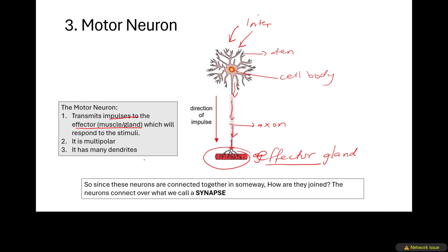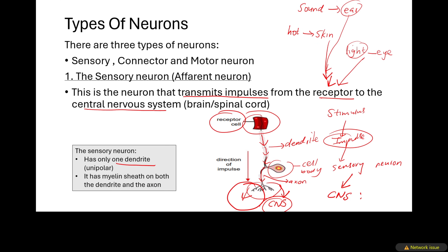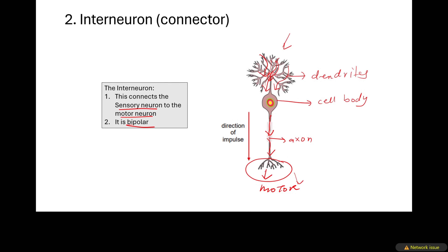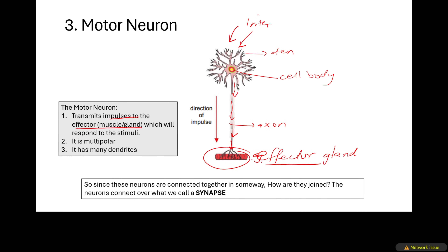The effector gland or muscle brings a response to the stimulus. For example, when it is hot, you sweat — the effector is the sweat gland. When you touch a hot stove, your muscles pull away — those muscles are effectors. They receive the message from the motor neuron that there is heat and they respond. Those impulses are transmitted through the motor neuron to the effector muscle or gland, which brings about a response to the stimulus. When somebody steps on your toe you move your toe quickly because the pain is transmitted as an impulse through all three neurons.